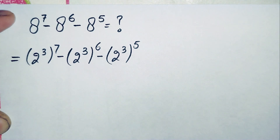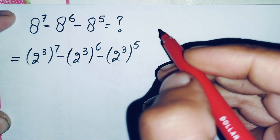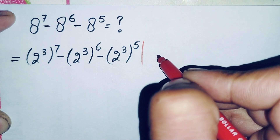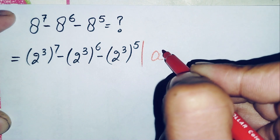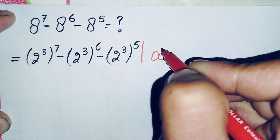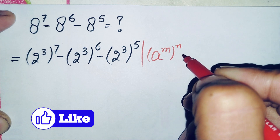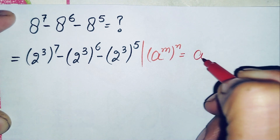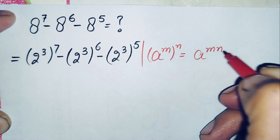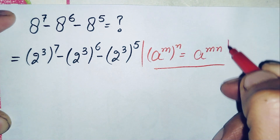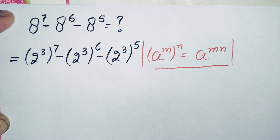In all the terms we will use an exponent math property and multiply the powers with each other. We will use the property: r raised to power m, all raised to power n, which can also be written as r raised to power m times n.